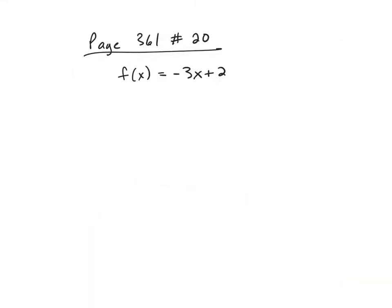This is problem number 20 on page 361. I've got a function written here in function notation, and remember from the video that f(x) is just a fancy way of saying y. For number 20, I'm supposed to find f(-2). All that means is I'm going to take the function f and I'm going to put in -2.